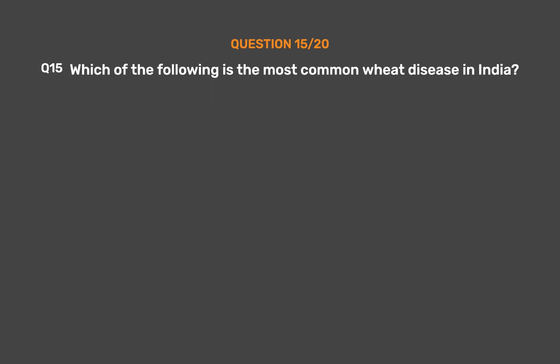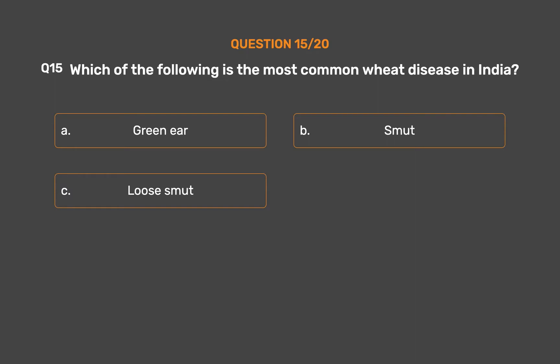Question number 15. Which of the following is the most common weed disease in India? Option A: Green ear. Option B: Smut. Option C: Loose smut. Option D: Rust. The correct answer is Option D, Rust.